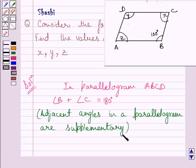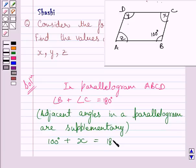Now substituting the corresponding values of angle B and angle C into this equation, we get 100 degrees plus x is equal to 180 degrees. As you can see in the figure, the measure of angle B is 100 degrees and the measure of angle C is x.